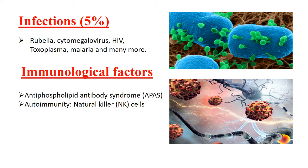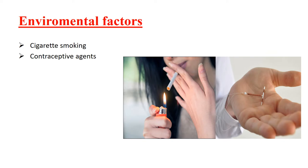Infections are accepted causes of both late and early abortions. Transplacental fetal infections could include rubella, cytomegalovirus, HIV, toxoplasma, malaria, and many more. Immunological factors include antiphospholipid antibody syndrome and natural killer cells. Antiphospholipid antibody syndrome causes fetal hypoxia by inhibiting trophoblast function, releases inflammatory mediators, and leads to formation of thrombosis in the uteroplacental vascular bed.